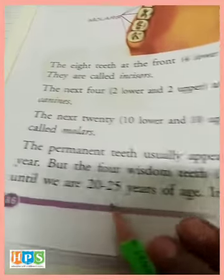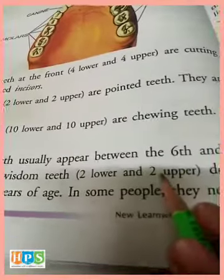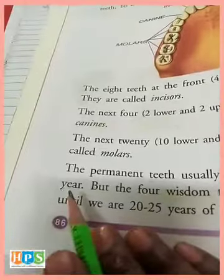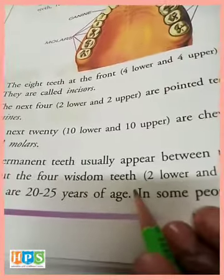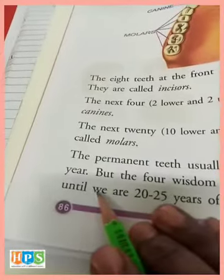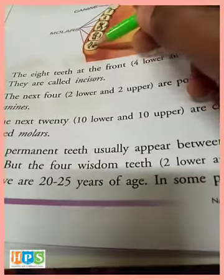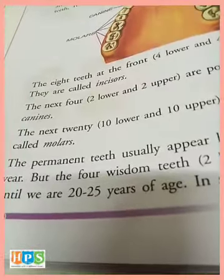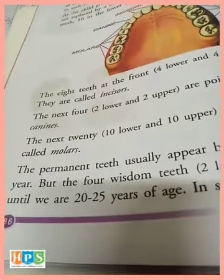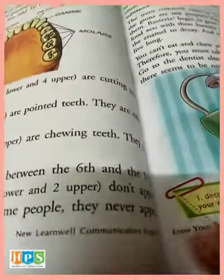The permanent teeth usually appear between the 6th and the 14th year. 6 se 14 years ke beech jaate hain. But the 4 wisdom teeth — 2 lower and 2 upper — don't appear until we are 20 to 25 years of age. Woh 20-25 year tak bhi nahin aate hain. In some people they never appear — kabhi kisi mein toh dikhai hi nahin dete hain.